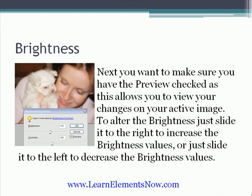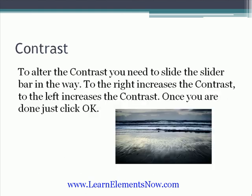You want to make sure you have the preview checked, as this allows you to view the changes on your active image. To alter the brightness, simply slide the slider bar to the right to increase the brightness values, or slide it to the left to decrease them. To alter your contrast, you simply need to move the slider bar the same way. When you're finished adjusting your image, all you need to do is click on OK.